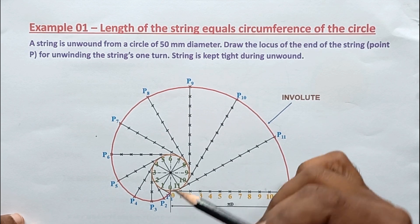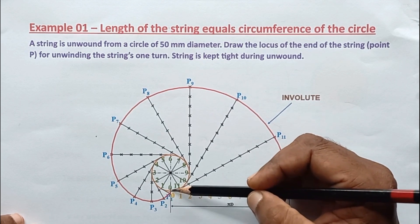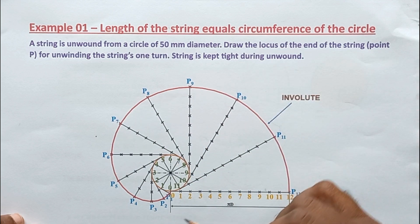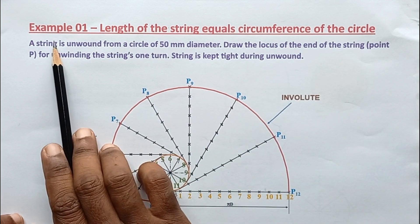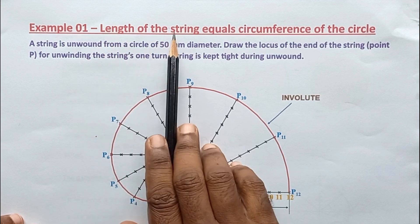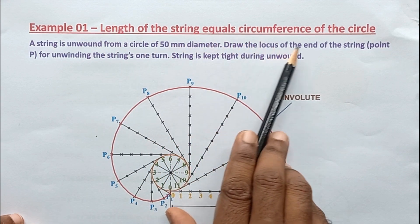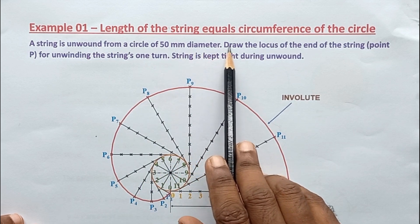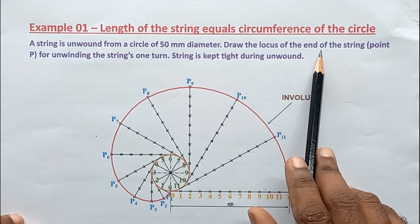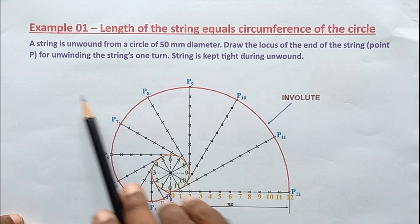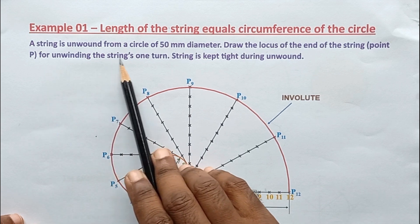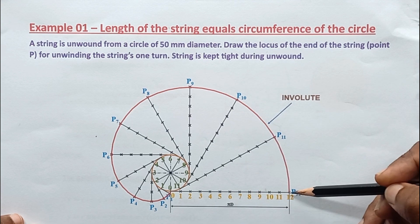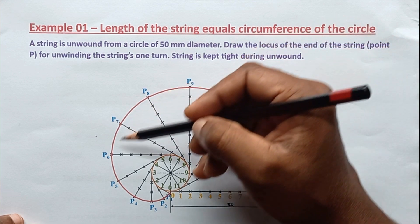In this video I'm going to explain how to construct an involute for a circle. The example given: the length of the string equals the circumference of the circle. The string is unwound from a circle of 50 millimeter diameter. We need to draw the locus of the endpoint of the string for unwinding one turn, with the string kept tight during unwinding.